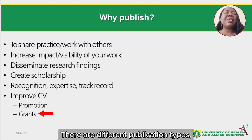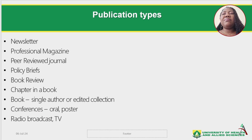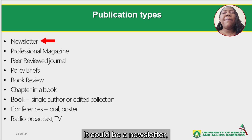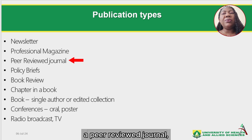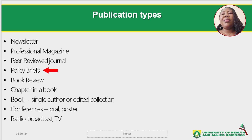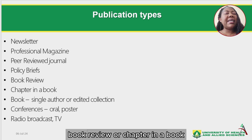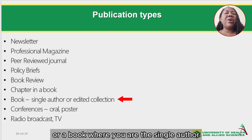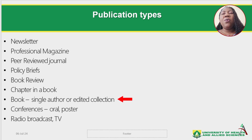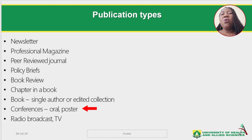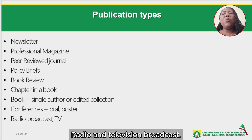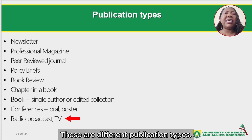There are different publication types. It could be a newsletter, a professional magazine, a peer review journal, policy brief, book review, or chapter in a book, or a book where you are a single author or edited collection. Conferences where you have the opportunity to present either orally or using a poster. Radio and television broadcasts — these are different publication types.